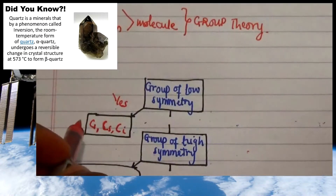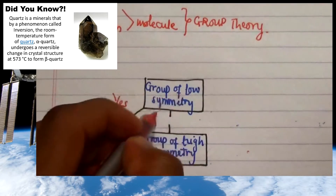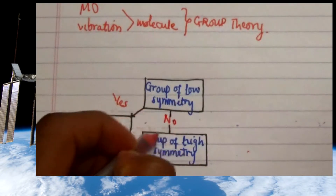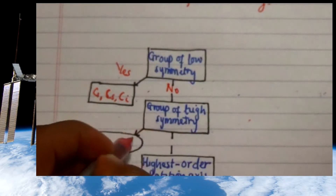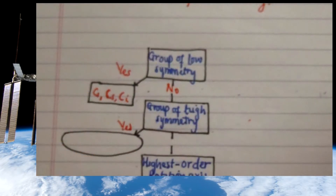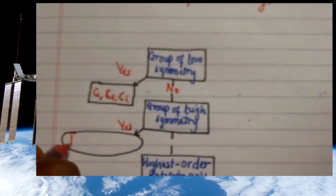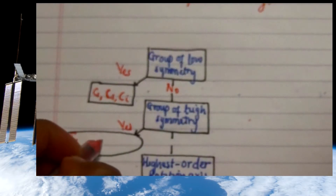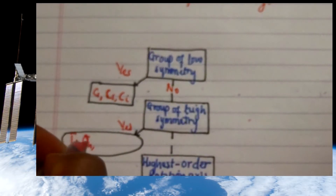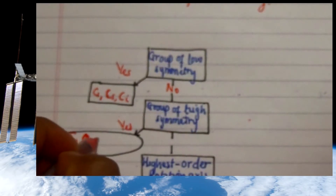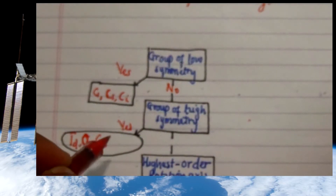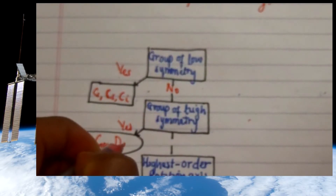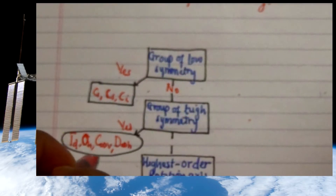However, if you are not in the group of low symmetry molecules, then you are in the group of high symmetry molecules. In that case, you could be a tetrahedral molecule represented as Td, or an octahedral shape represented as Oh, or a molecule with an infinite number of rotations with planes that are parallel (C∞v with infinite sigma planes), or icosahedral (Ih).